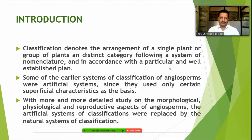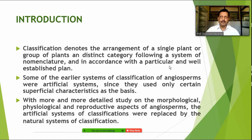With more and more detailed study on the morphological, physiological, and reproductive aspects of angiosperms, the artificial systems of classification were replaced by the natural system. When we found that the artificial system was not sufficient to trace out the phylogeny of a particular species, it was gradually replaced by exhaustive characterization based on morphology, anatomy, and other laboratory-observable characters. That system is known as the natural classification system.